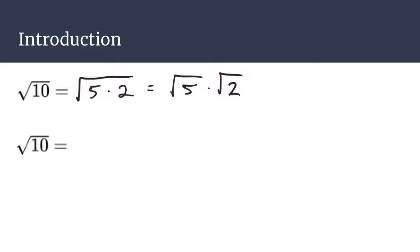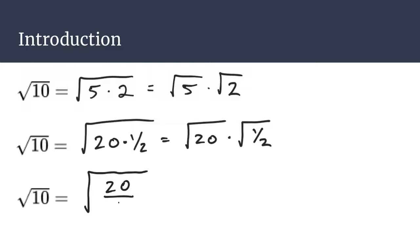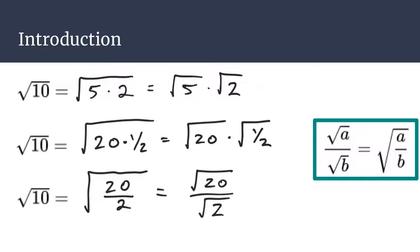Another way to take a look at the square root of 10 is to say that would be the same thing as 20 times 1 half. If we follow our product property, that means we could rewrite that as the square root of 20 times the square root of 1 half. And that leads us to fractions, because the third way to look at the square root of 10 is that it equals the square root of 20 divided by 2. So it follows that we can write the square root of 20 divided by the square root of 2. When you have a fraction inside a radical, you can write it as a fraction of two different radicals instead, and that will be important as we work through our simplification.